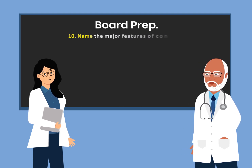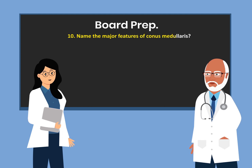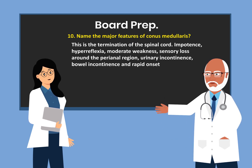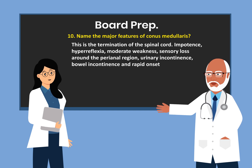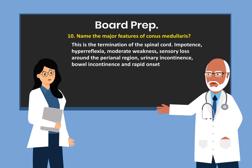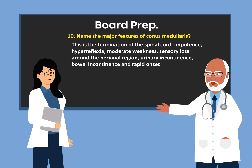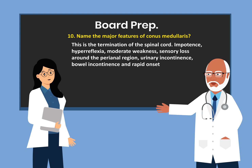Name the major features of conus medullaris. This is the termination of the spinal cord. Impotence, hyperreflexia, moderate weakness, sensory loss around the perianal region, urinary incontinence, bowel incontinence, and it has a very rapid onset.